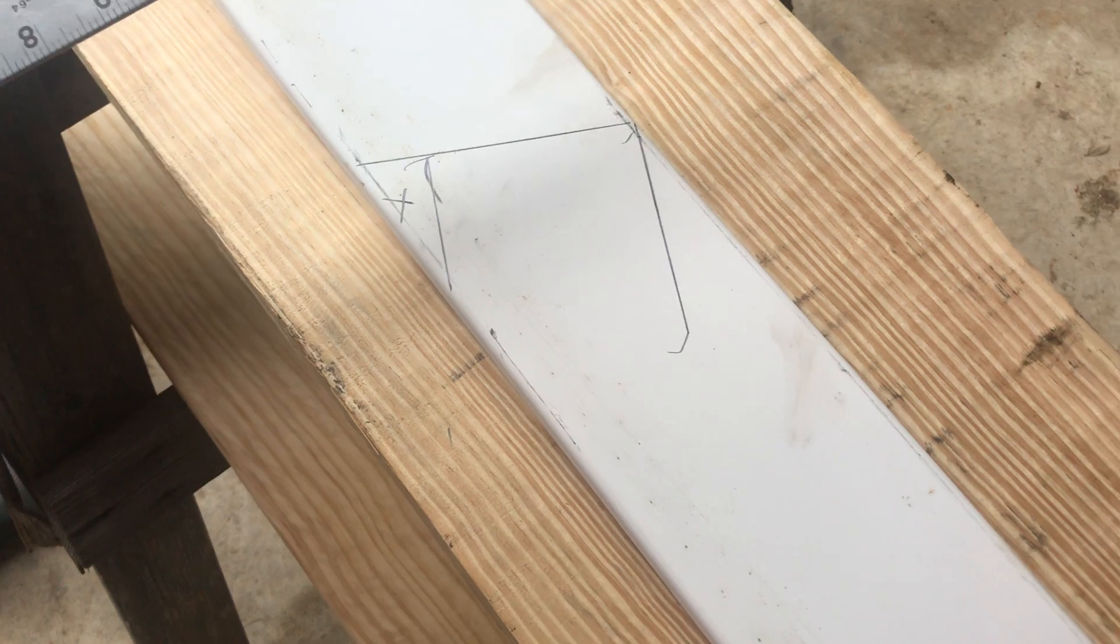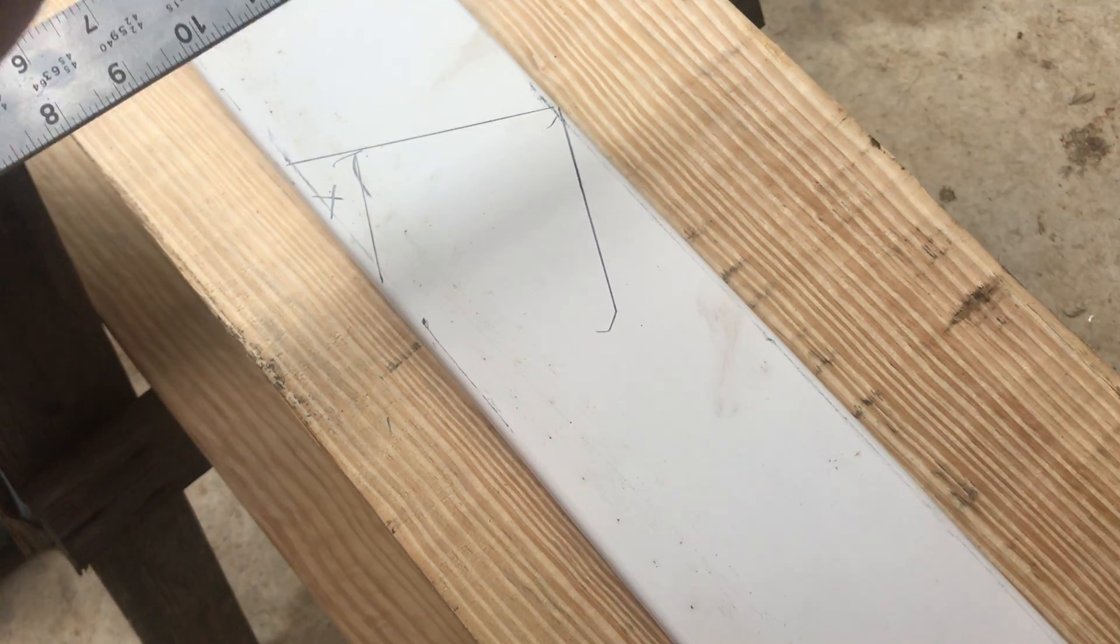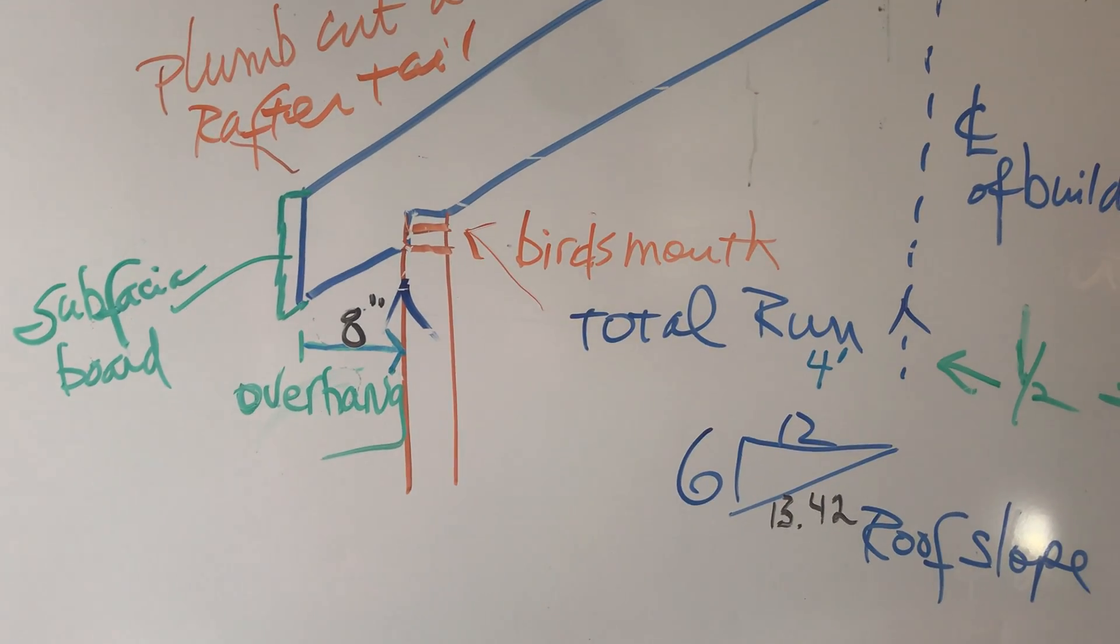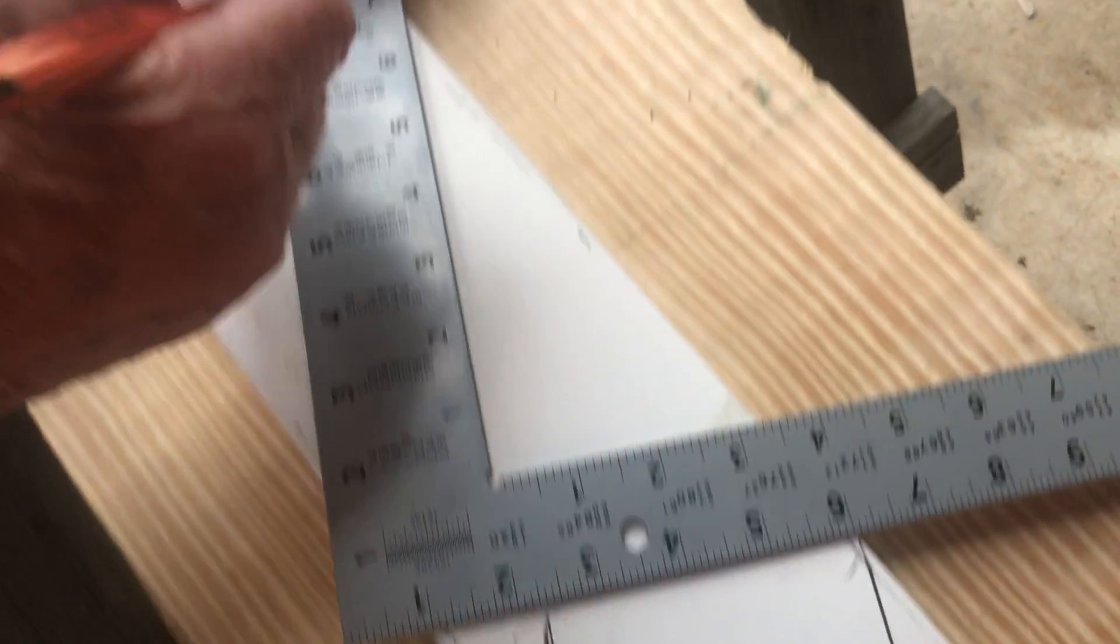Now, I have 8 inches of overhang. And so now, I need to hold 6, 12, and mark 8 inches, right there.